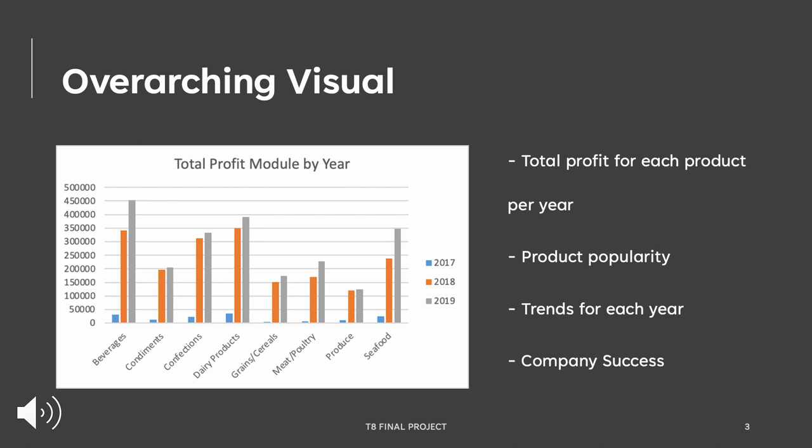Northwind Traders serves a variety of international grocers with different products and creates many sales. The total profit module by year shows the success of certain product categories based on year. This module is a summarizing visualization displaying the profit, product categories, and year.